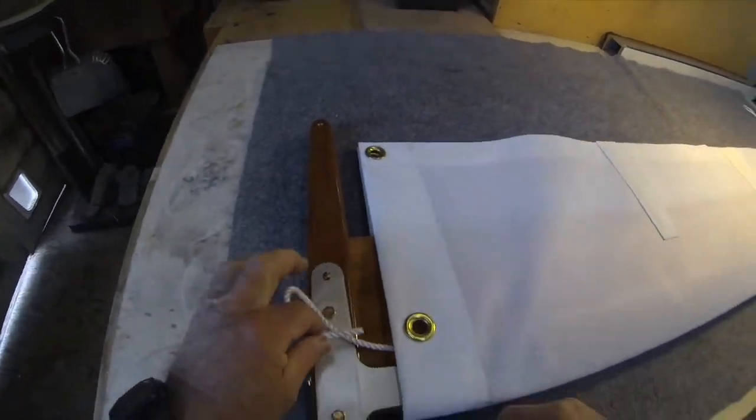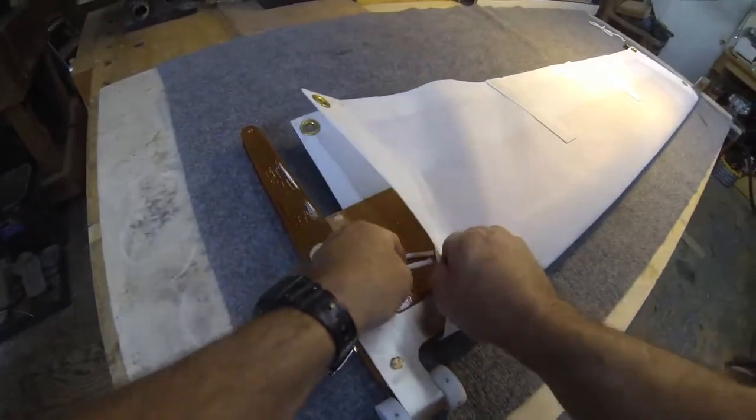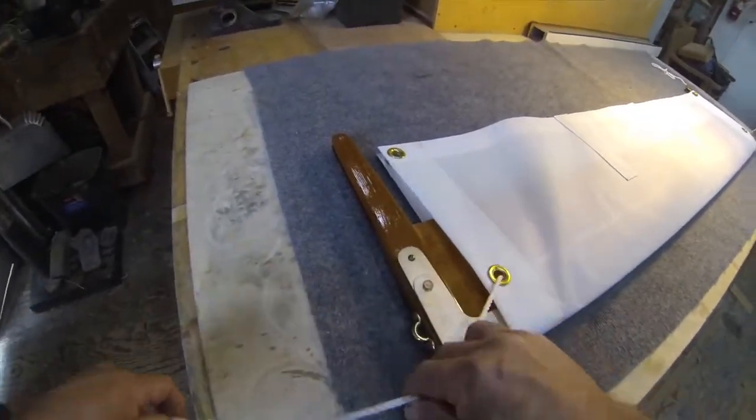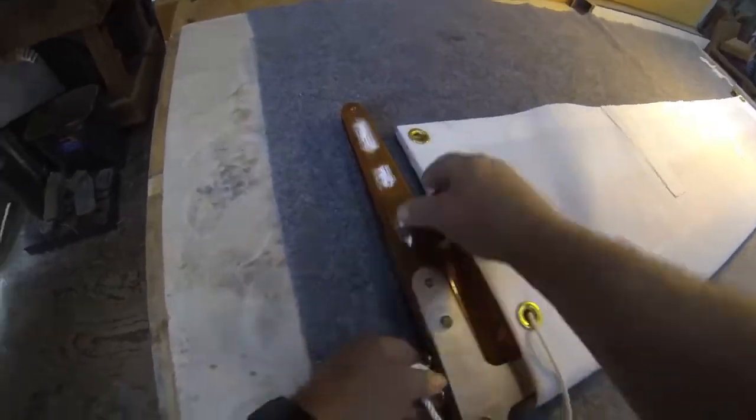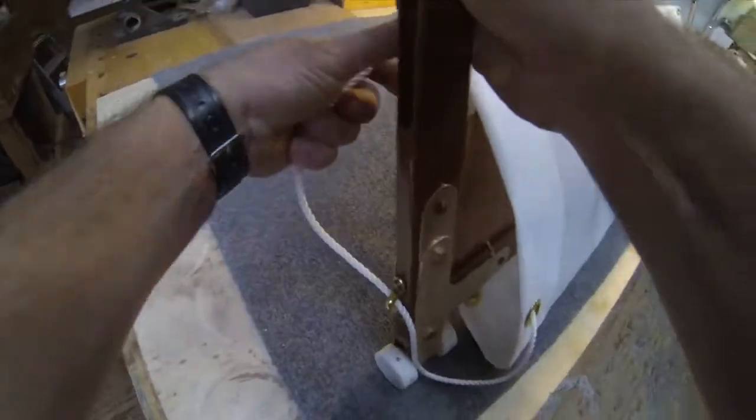Then what we'll do is it'll come through the grommet, through the fairlead, over to the other side.